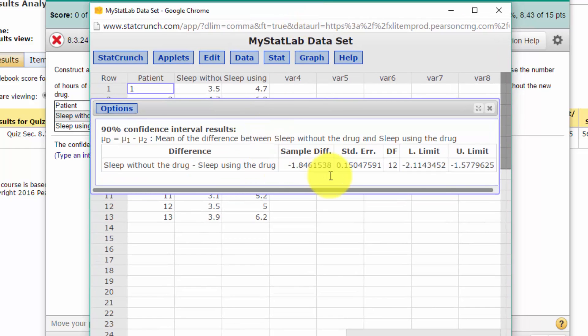There's the lower limit and the upper limit. The sample difference is this 1.846. So it goes from -2.114 on the lower side of 1.846 up to the upper limit of 1.577. Let's just drag down and see.